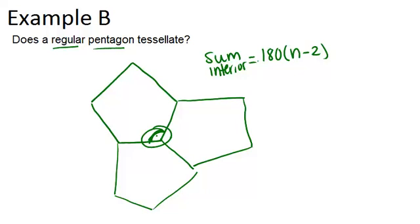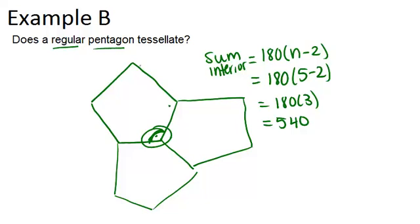So here we're talking about n equals five, because it's a pentagon with five sides. So we're going to do 180 times five minus two, which is 180 times three, which is 540. Now that's the sum of all five interior angles for one pentagon.